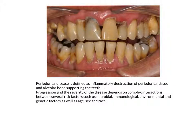Periodontal disease is defined as inflammatory destruction of periodontal tissue and alveolar supporting bone surrounding the teeth. Progression and severity of the disease depends on complex interactions between several risk factors such as microbial, immunological, environmental and genetic factors, as well as age, sex and race. So periodontal disease is a multifactorial disease. The main cause is bacteria, and many risk factors are associated with the progression of periodontitis or gingivitis.